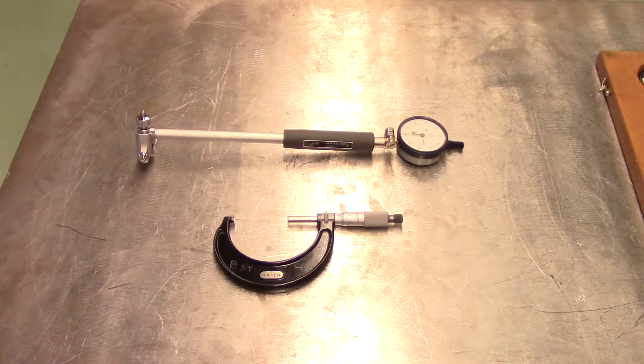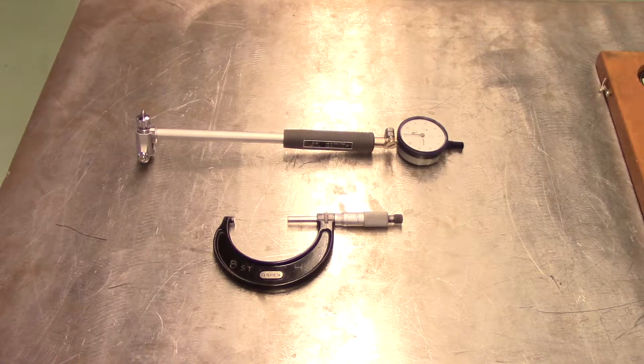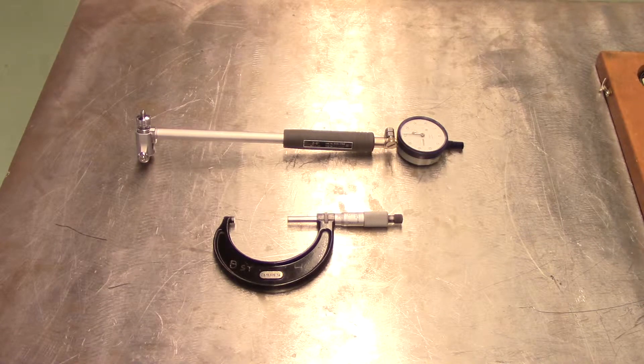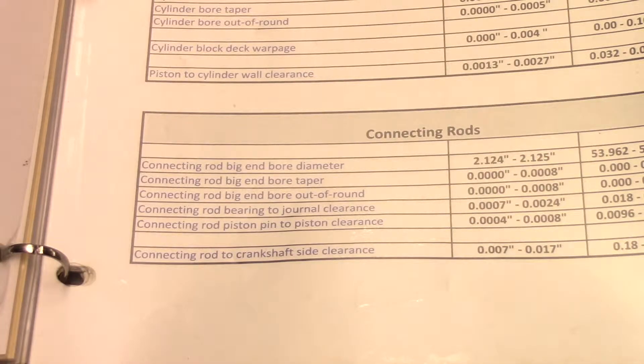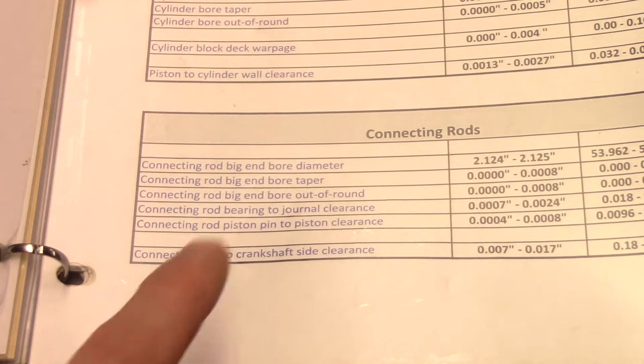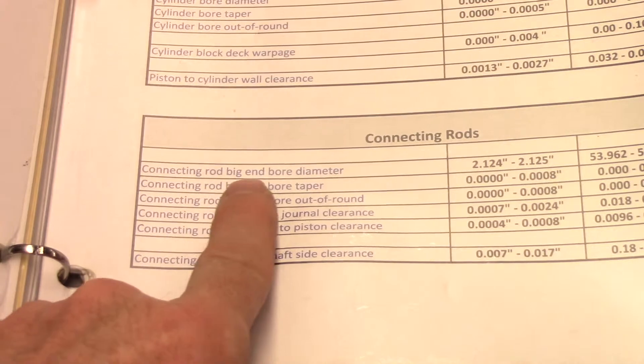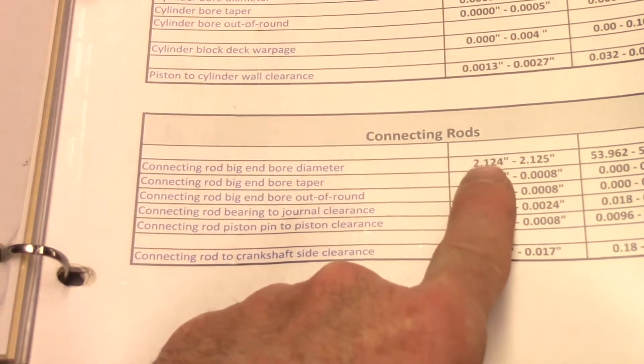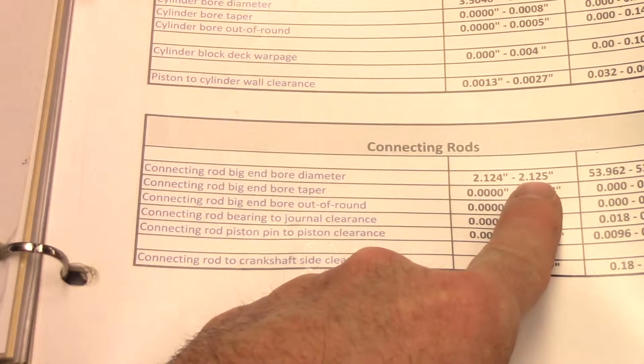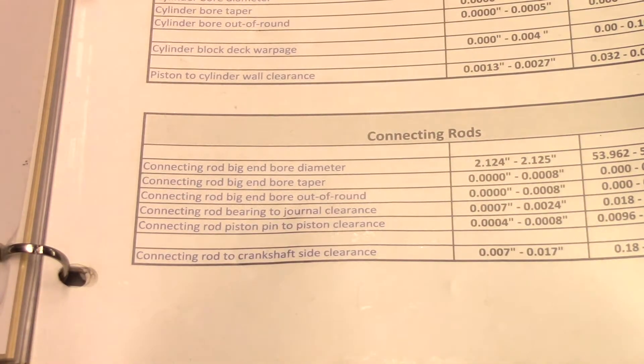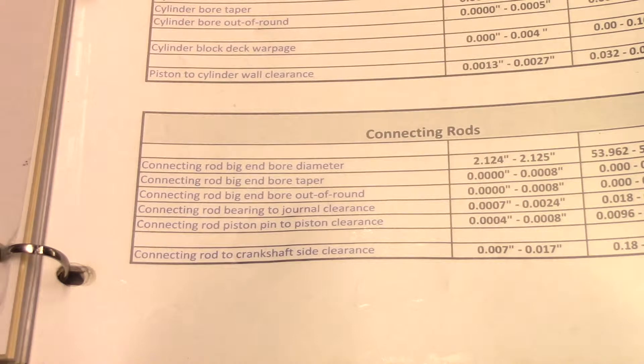In order to actually measure the size of a bore, we must first zero the bore gauge to the size that the bore is supposed to be. Look up the specified size of the bore in the service information. This value is often given to us as a range or an allowable tolerance. As a bore will only wear larger during service, it makes the most sense to zero the bore gauge to the maximum allowable tolerance. In this example, we will choose 2.125 inches.